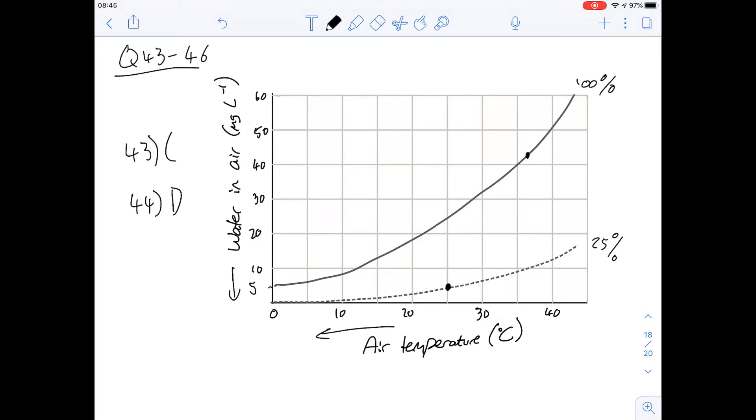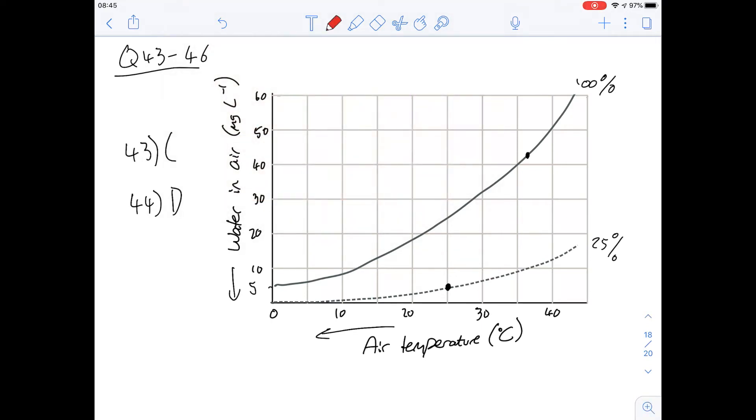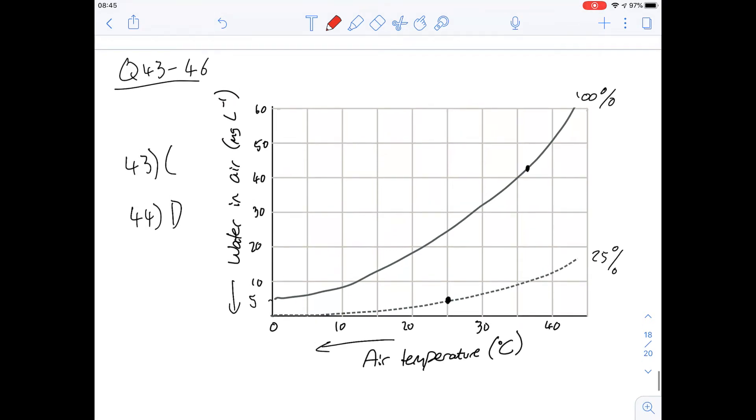Question 45 says consider a kangaroo rat inhaling air of 30°C with 25% relative humidity. Let's put on the dots as we go along here, so it's 30°C, 25% relative humidity, so that is here. And it's exhaling saturated air at 27°C.